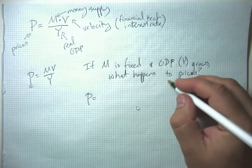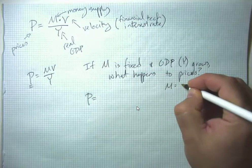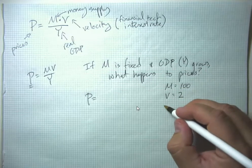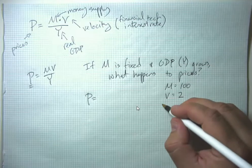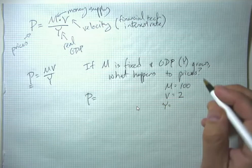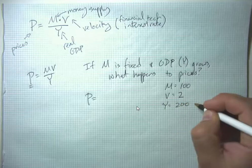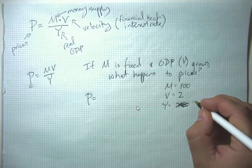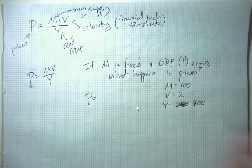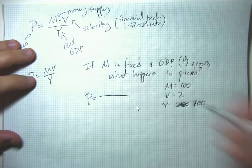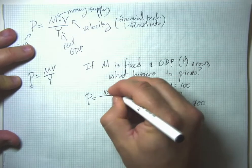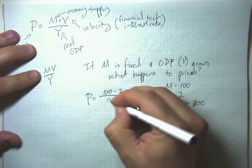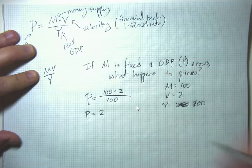Let's suppose initially the money supply is 100, velocity is 2, and that's about what it is in the long run in the United States for M2. And real GDP is 100. If that's true, I'm going to plug these numbers in and get a prediction that the money supply times the velocity divided by GDP gives us a price level of 2.